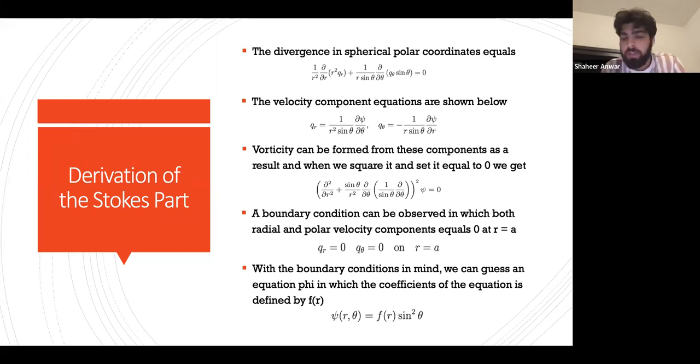As you can see, q_r(a) = 0 and q_θ(a) = 0 at r = a. With the boundary conditions in mind, we can guess an equation φ in which the coefficients are defined by f(r), and φ(r,θ) = f(r) * sin²θ.